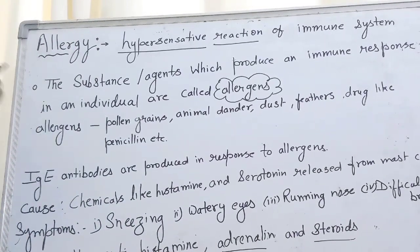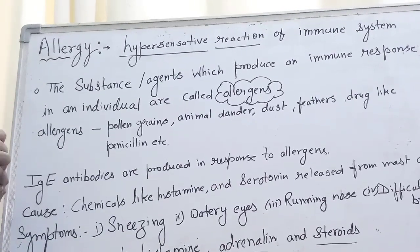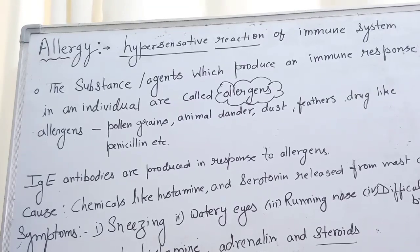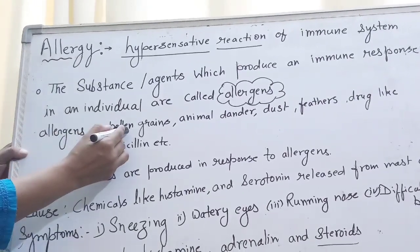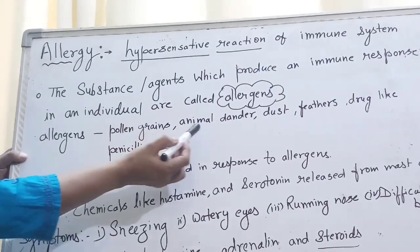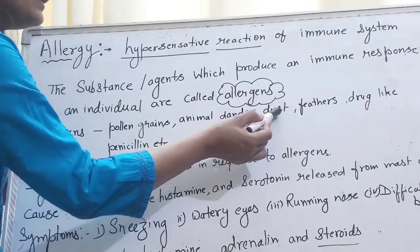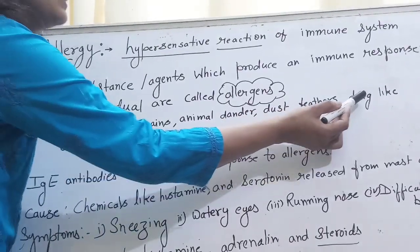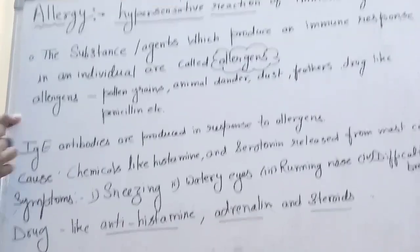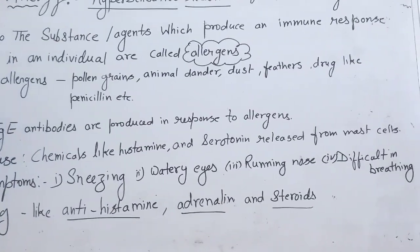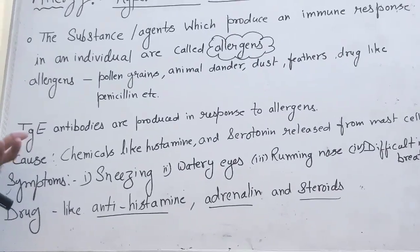Allergens are of different types, and different persons have allergy to different types of agents and substances. Allergens can be pollen grain, animal dander, dust particles, and some drugs like penicillin. We see that if a reaction is going on, our body is showing a response.